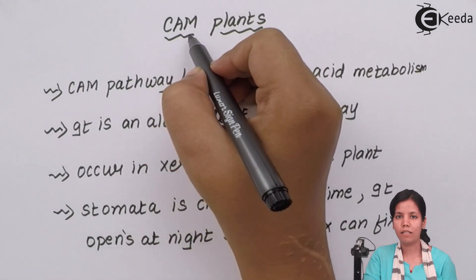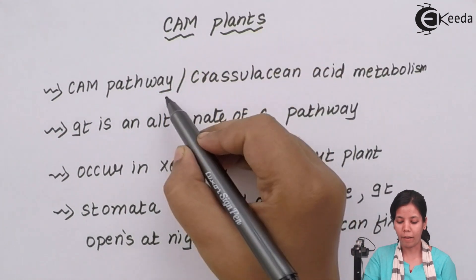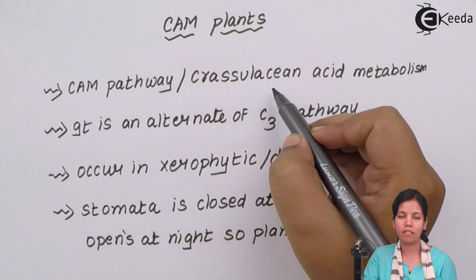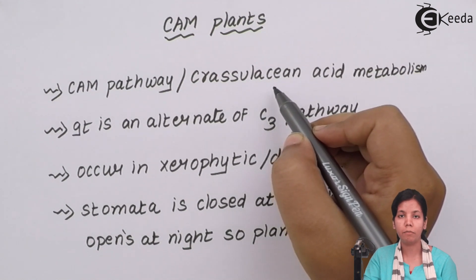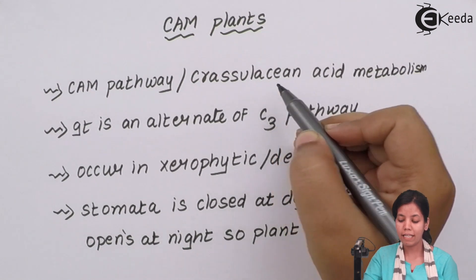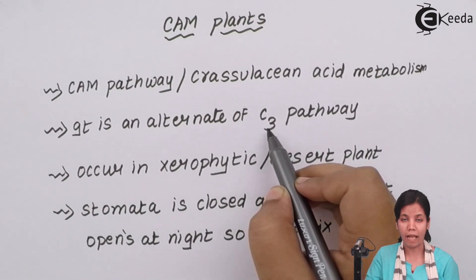CAM plants, or desert plants — the CAM pathway is also called Crassulacean Acid Metabolism and was first observed in Bryophyllum leaves. The CAM pathway is an alternate for the C3 pathway, or Calvin cycle, also known as the dark reaction or Blackman's reaction.